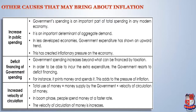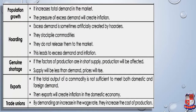Increased velocity of circulation: total use of money equals money supplied by the government multiplied by the velocity of circulation of money. In a boom phase, people spend money at a faster rate, increasing the velocity of circulation. Population growth also increases total demand in the market, and the pressure of excess demand creates inflation. Hoarding: excess demand is sometimes artificially created by hoarders who stockpile commodities and don't release them to the market, leading to excess demand and inflation.